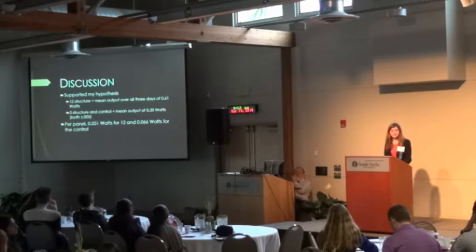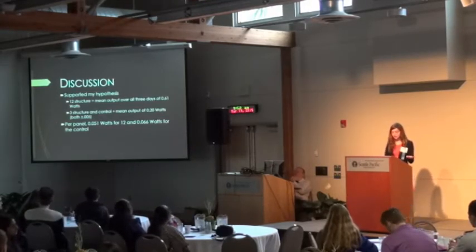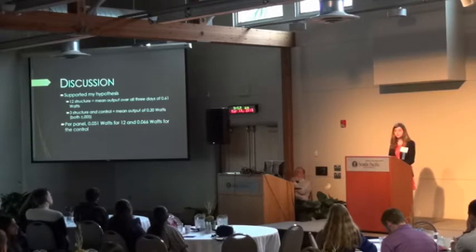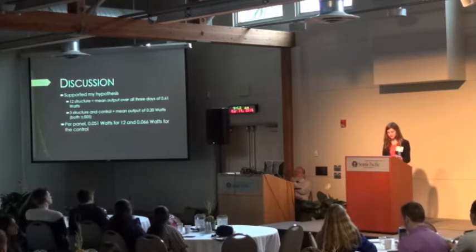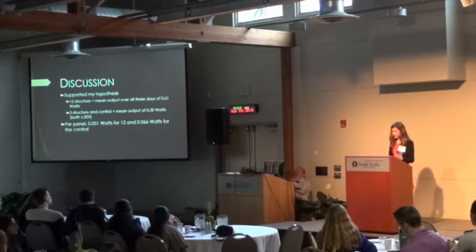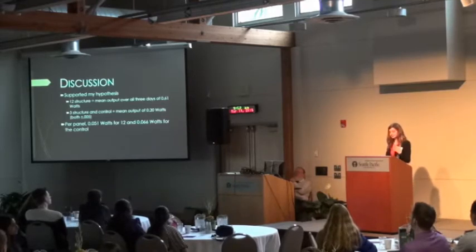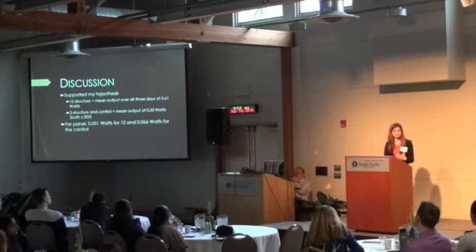The data supported my hypothesis. The 12-panel structure produced an average of 0.61 watts, while the control and the 3-panel structure produced about 0.2 watts. This meant my 12-panel structure was producing more than three times the amount of power as a traditional array within the same floor space. I also calculated power per panel for each structure and discovered that the 12-panel was slightly less efficient per panel than the control due to overlap, but I still got more total power from the space using the 12.